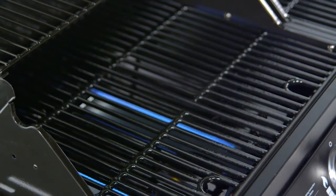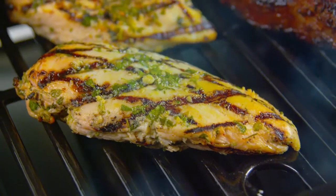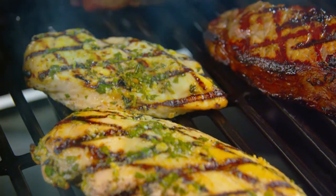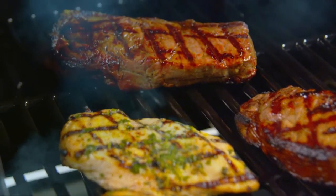The cast iron cooking grates are coated with high-gloss porcelain enamel. Cast iron is ideal for retaining heat, while the enameled surface is ideal for transferring heat directly to the food for searing and locking in natural juices.